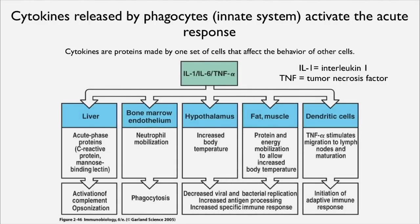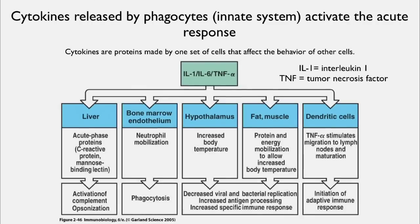In the dendritic cells — which we'll examine in more detail — tumor necrosis factor stimulates their migration into the lymph nodes and their maturation. They are the cells picking up molecular signals of infection and presenting them to T cells in the lymph nodes, which results in the initiation of the adaptive response.